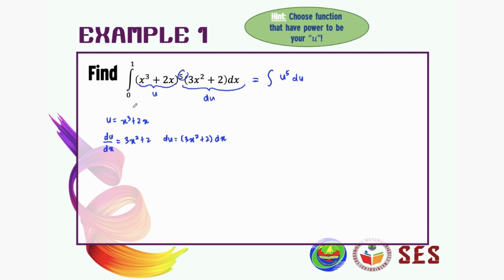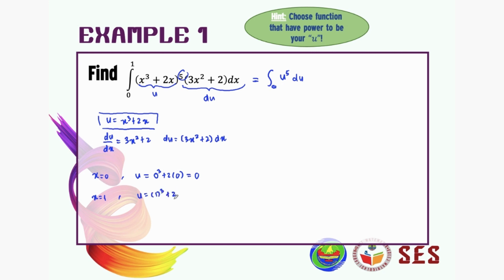Now, how about the lower and upper limits? Notice that 0 and 1 are the lower and upper limits for variable x. Since we've changed to variable u, for the lower limit when x equals 0, substitute into our u: 0 cubed plus 2 times 0 equals 0. For the upper limit when x equals 1, u equals 1 cubed plus 2 times 1, which is 3.